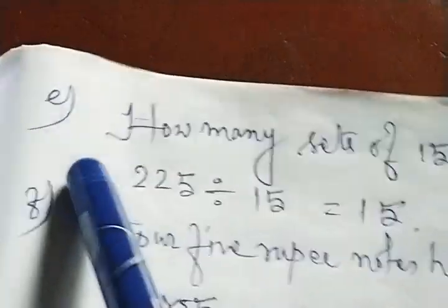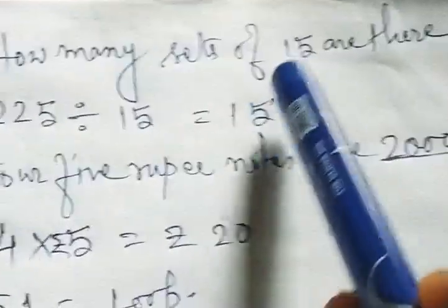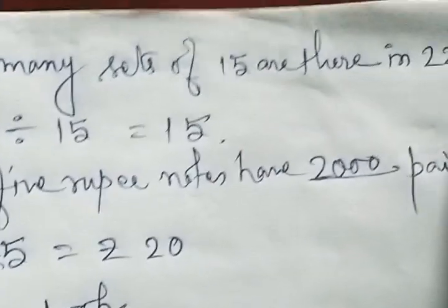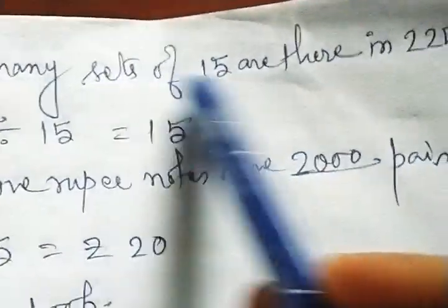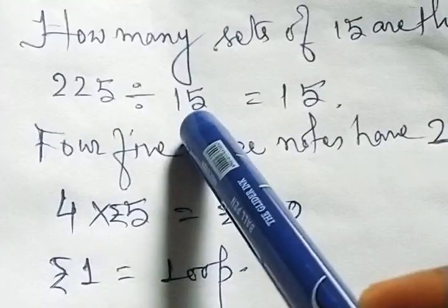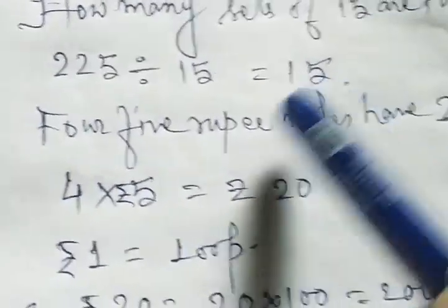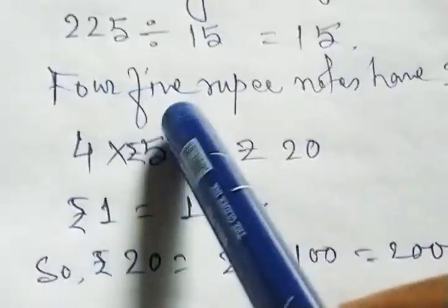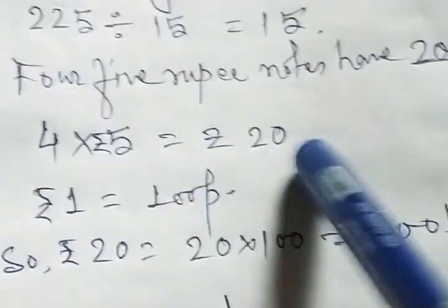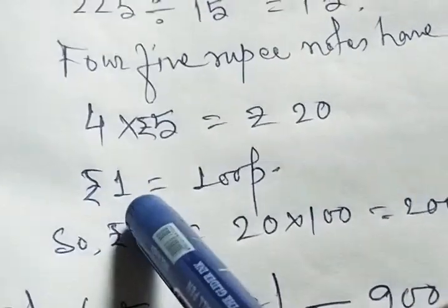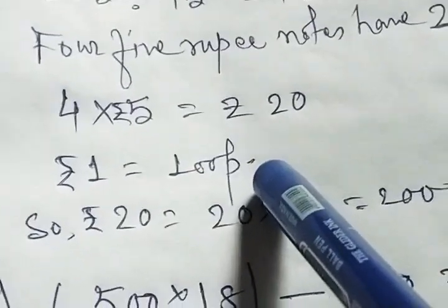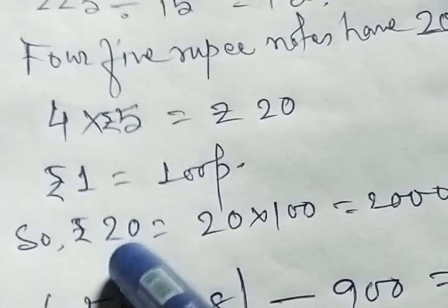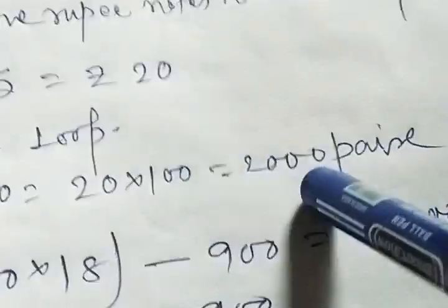Next number E. How many sets of 15 are there in 225? So 225 divided by 15 equal to 15. Four 5 rupees notes have how many paisa? Four 5 rupees, so 4 times 5 equals 20 rupees. All of you know 1 rupee equal to 100 paisa. So rupees 20 equal to 20 multiply by 100, so 2000 paisa.